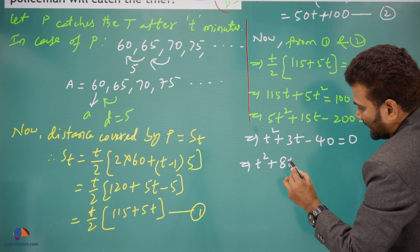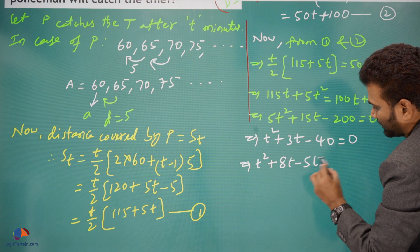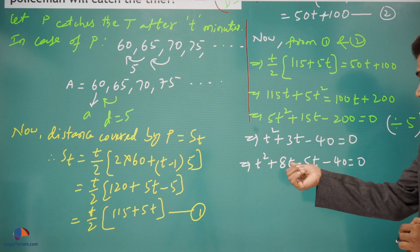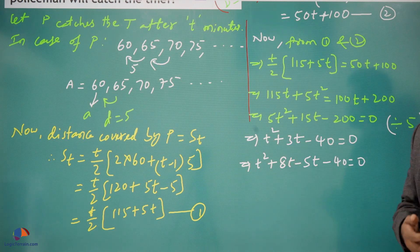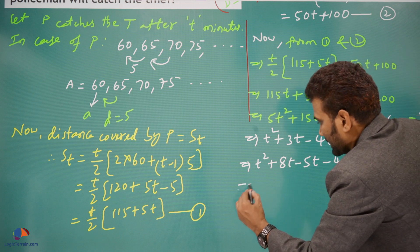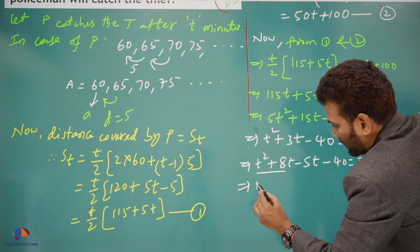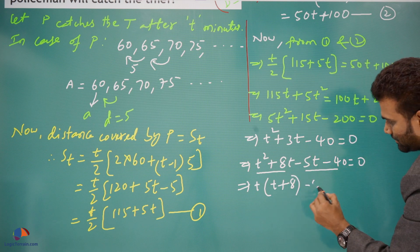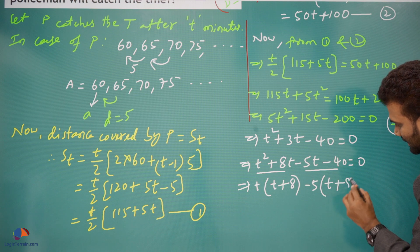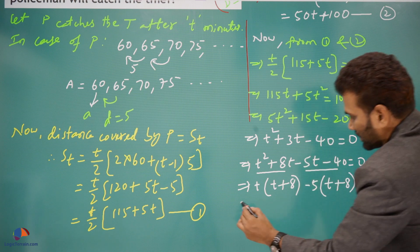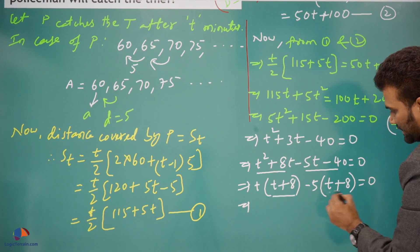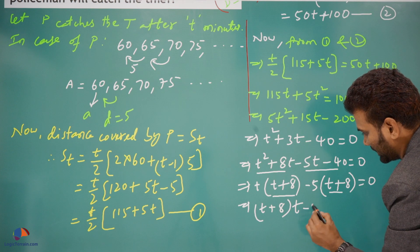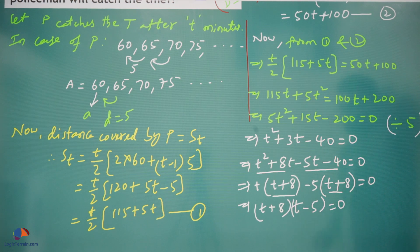Splitting 3t into 8t − 5t: t² + 8t − 5t − 40 = 0. This works because 8 × (−5) = −40 and 8t − 5t = 3t, satisfying both conditions. Taking t common from the first two terms and −5 common from the last two terms: t(t + 8) − 5(t + 8) = 0. Then (t + 8)(t − 5) = 0.